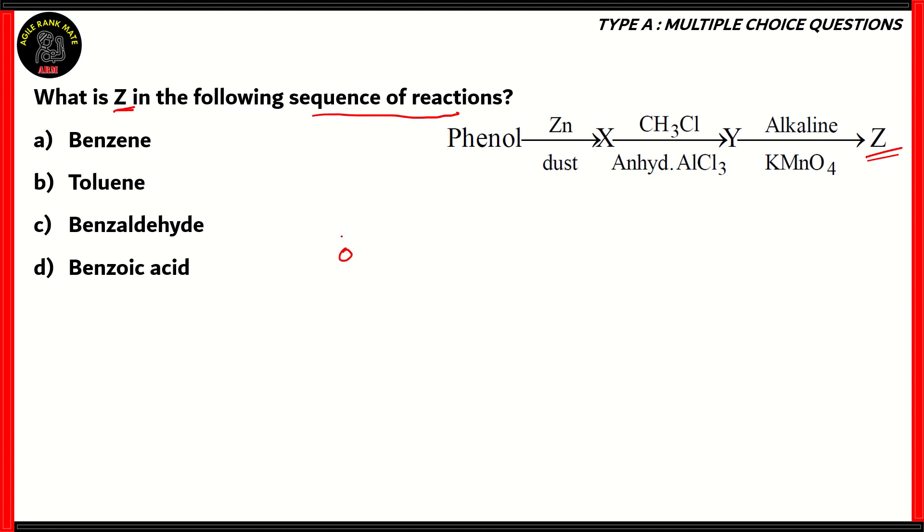So phenol, which is basically benzene with an OH group, when it reacts with zinc dust, the OH group disappears, the OH group is removed. Therefore, phenol is reduced to form benzene. This is phenol, this is benzene.